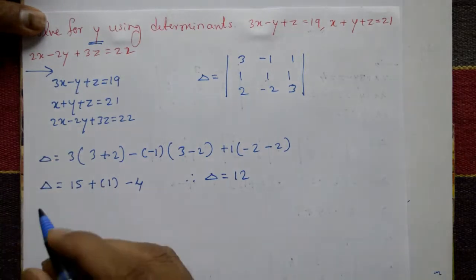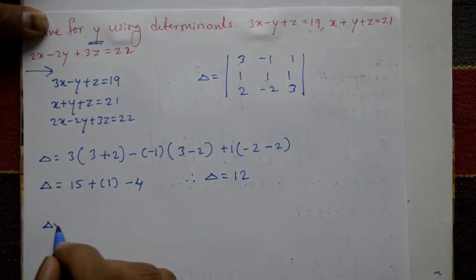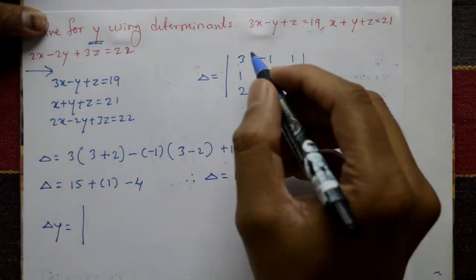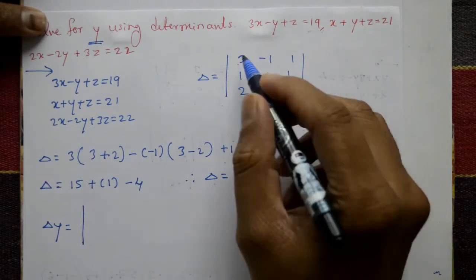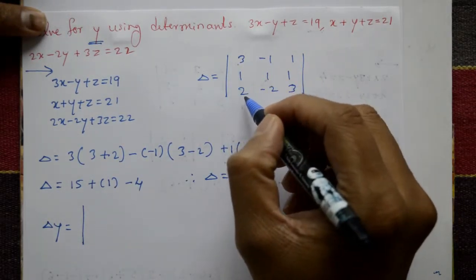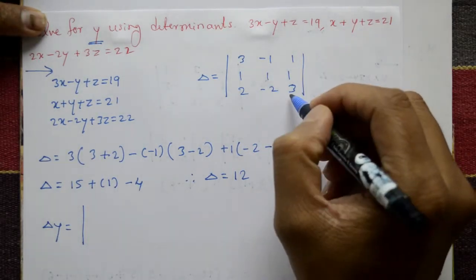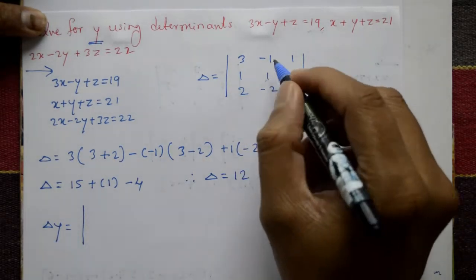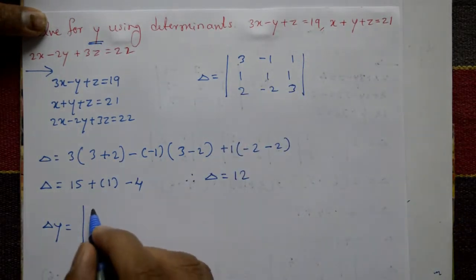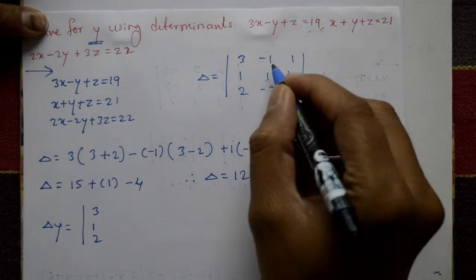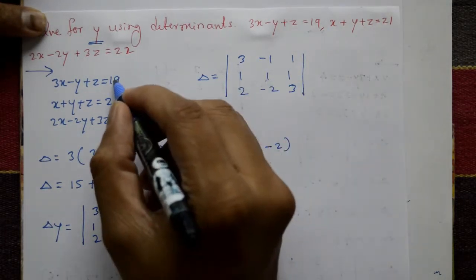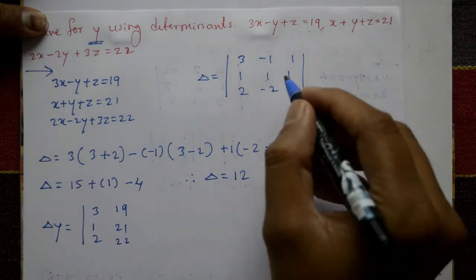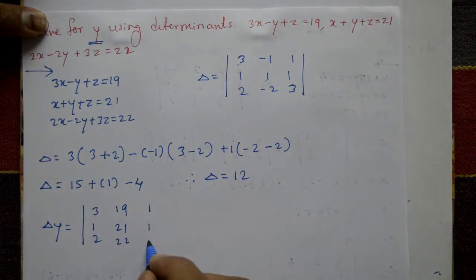Next, find Delta y. Using Cramer's Rule, Delta y means replacing the second column with the constants. The first and third columns remain the same: [3, 1, 2] and [1, 1, 3]. The second column is replaced with [19, 21, 22].